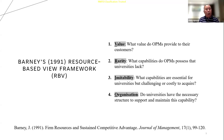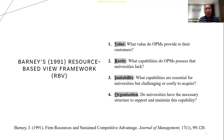Here are the details of Barney's model. Looking at the VRIO dimensions: Value — what do OPMs provide to their university customers and training institutions? Rarity — what capabilities do OPMs possess that universities lack? Number three is Inimitability — what capabilities are essential for universities but challenging or costly to acquire for immediate use, both short-term and long-term? And number four, Organisation — do universities have the necessary structure to support and maintain these capabilities?